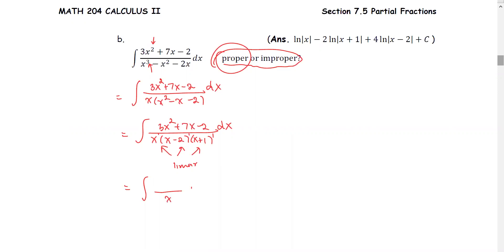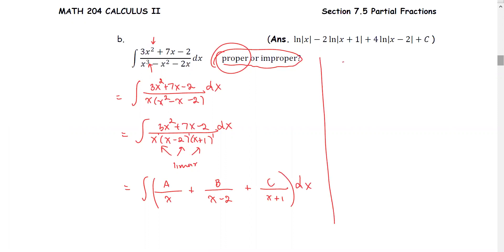The first partial fraction has denominator x, the second has denominator x minus 2, and the third has denominator x plus 1. We are going to find the undetermined coefficients A, B, and C. On the side, from the original expression: 3x squared plus 7x minus 2 divided by x times x minus 2 times x plus 1 equals A over x plus B over x minus 2 plus C over x plus 1.